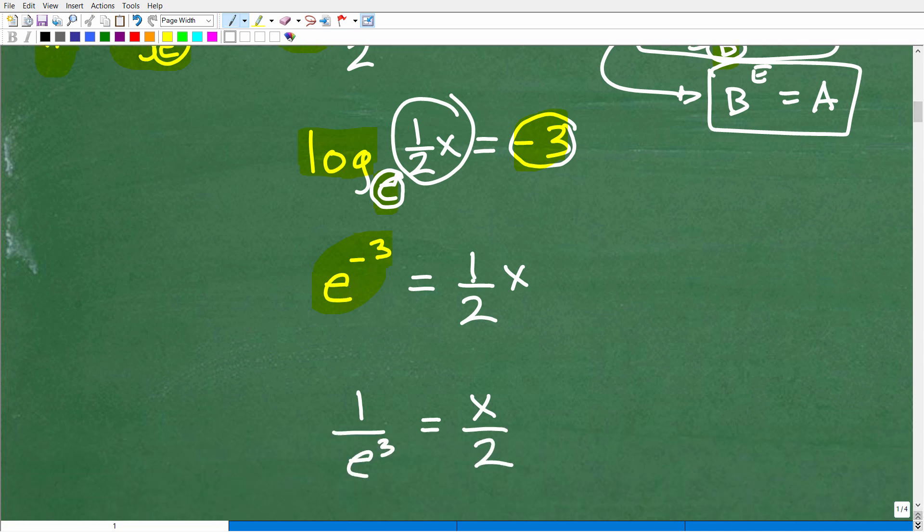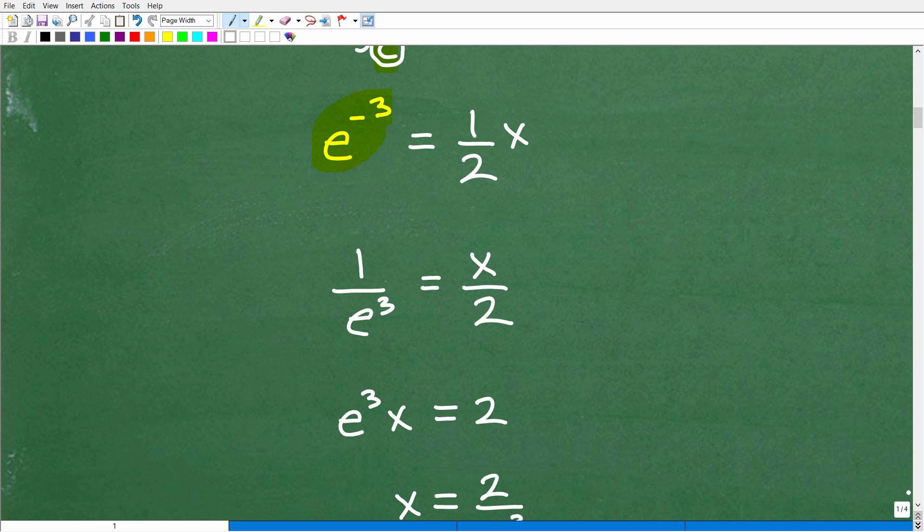All right, so I have e to the negative 3 power is equal to this right here. This is our answer, 1 half x. So once you have that set up, now this becomes kind of basic algebra. So e to the negative 3 power, that's going to be equal to 1 over e cubed. Now, if you don't know that, you need to review your properties of exponents.